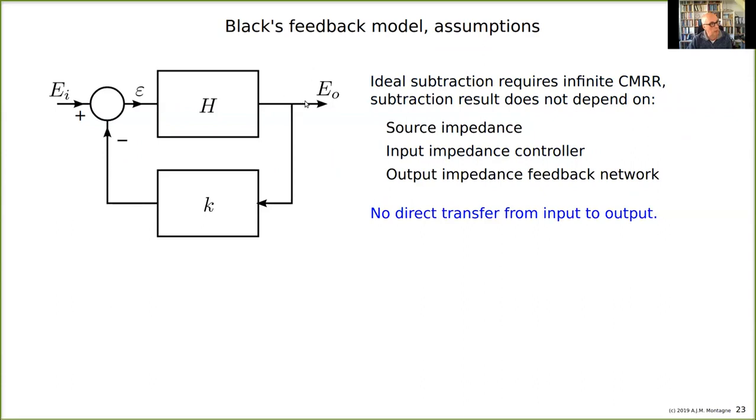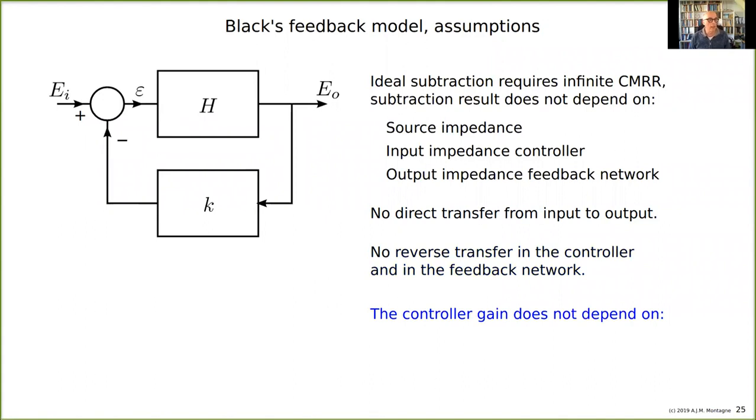And there is no direct transfer from input to output. We simply assume that these blocks are unilateral, so there's only transfer in this direction through H and there's only transfer in this direction. But if you put a resistor here, there will be transfer in this direction as well. That is not modeled in the model of Black. So the reverse transfer in the controller and in the feedback network. And then there's another thing: the controller gain H, because we said the loop gain is H times k, but what happens if you change the load or if the impedance of k, of this network that is there changes? So it means that the controller gain is independent of the input impedance of the feedback network, of the load impedance. And this all are assumptions.